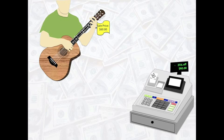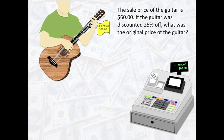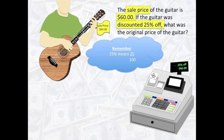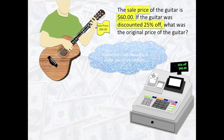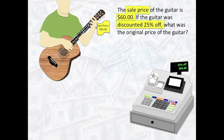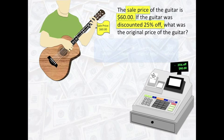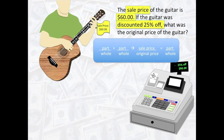Let's take a look at the next problem. The sale price of the guitar is $60. If the guitar is discounted 25% off, what was the original price of the guitar? Remember, that 25% can also mean 25 over 100. Proportions can be used to solve percent problems. Let's use the proportion part over whole equal part over whole, or in other words, sale price over original price equal part over whole to help us solve this problem.